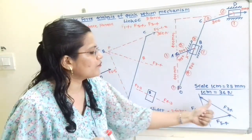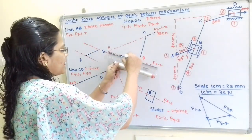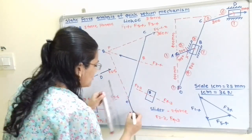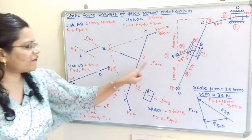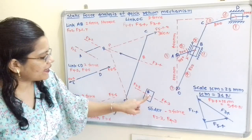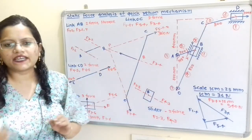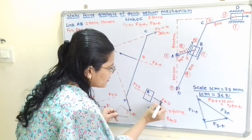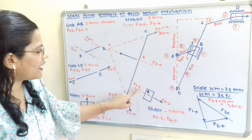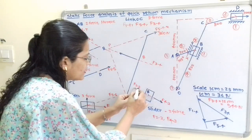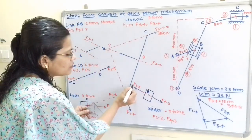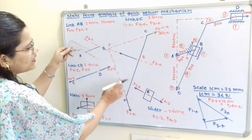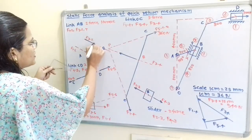From the force polygon, F of 3 to 4 has a direction towards the left-hand side, and F of 1 to 4 has a direction downward. F of 3 to 4 at point B and F of 4 to 3 are opposite in direction and equal in magnitude, so F of 4 to 3 points towards the right. F of 4 to 3 and F of 2 to 3, and then F of 2 to 3 and F of 3 to 2, are also equal in magnitude but opposite in direction.